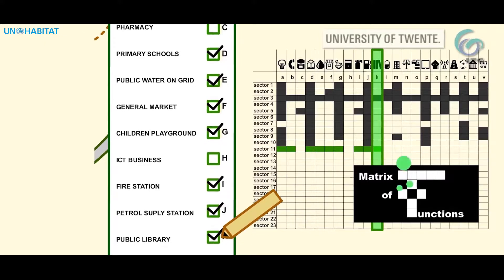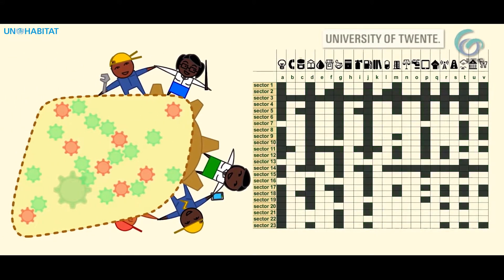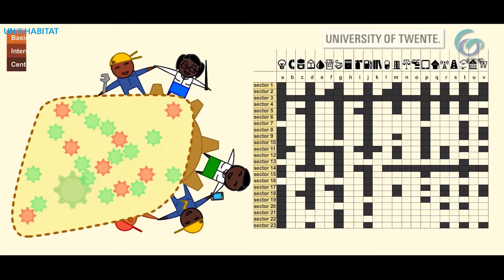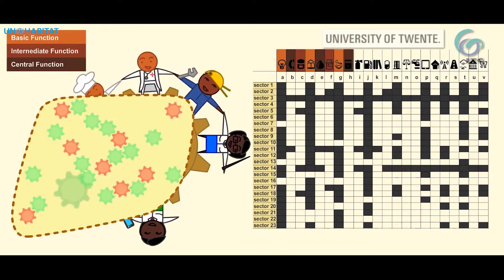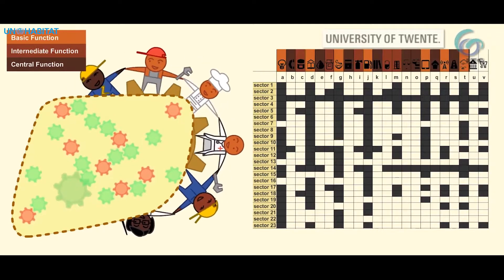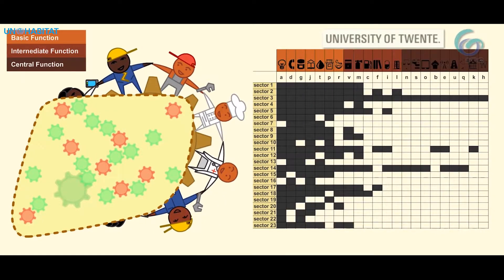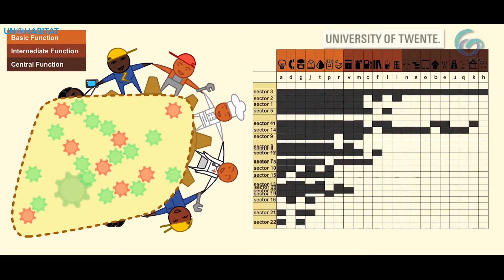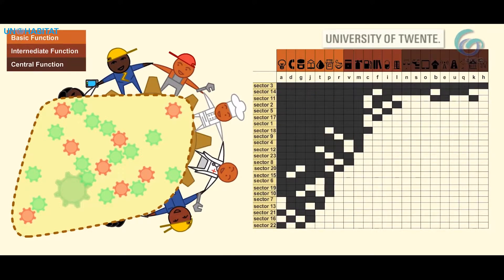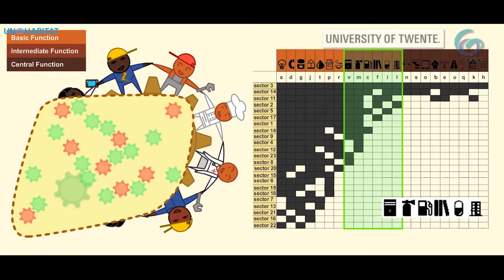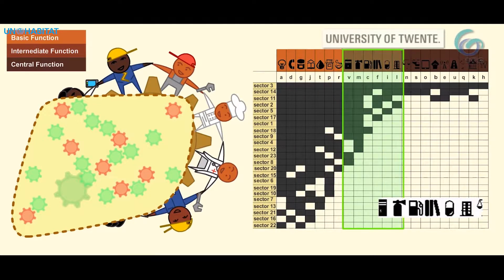So the matrix shows for each municipality which functions it has or which it doesn't have. From the matrix of functions, the hierarchy of settlements emerges by sorting the most frequent functions to the left and districts with most functions to the top. We can now identify groups of basic functions that almost all municipalities have, intermediate functions that the bigger municipalities have, and central functions that only a few municipalities have.